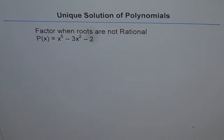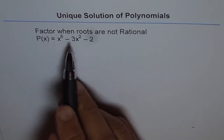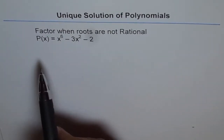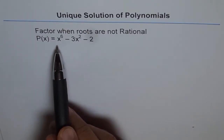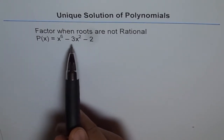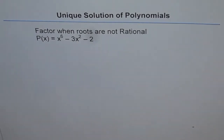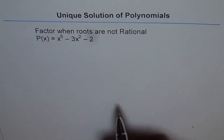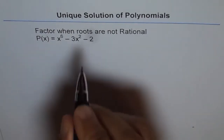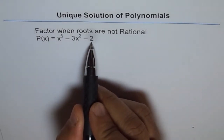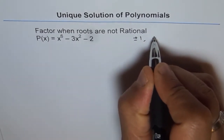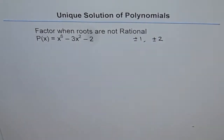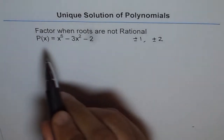We are looking at polynomial equations and trying to factor them when the roots are not rational. Here is a polynomial p(x) which equals x to the power of 6 minus 3x squared minus 2. If we use the factor theorem, the possible rational factors are factors of minus 2, which are plus and minus 1 and plus and minus 2.